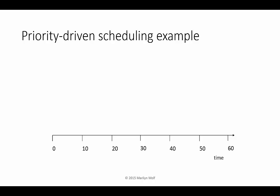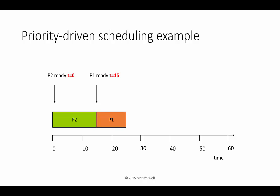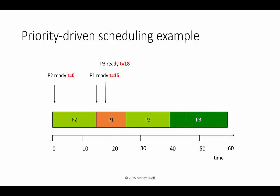Here's our timeline. In this example, we won't be executing periodically — I'll set up the release times of these processes to illustrate some important properties of priority-driven scheduling. At T=0, P2 is the only process that's ready to run, so it will run. At T=15, P1 becomes ready. It has higher priority, so it will preempt P2. At T=18, P3 becomes ready, but it has the lowest priority so it can't preempt. P1 will continue to execute until it finishes. At that point, P2 starts to execute, and since it has higher priority than P3, it will run until it finishes. Finally, P3 will execute.